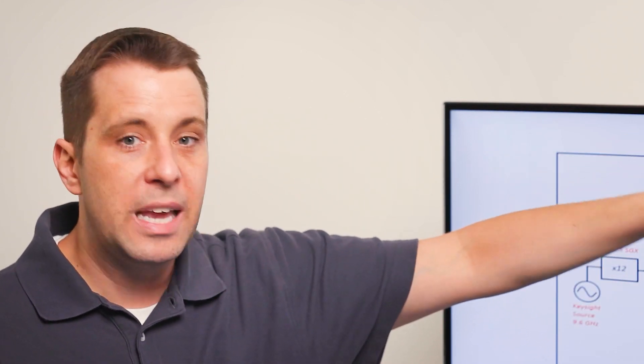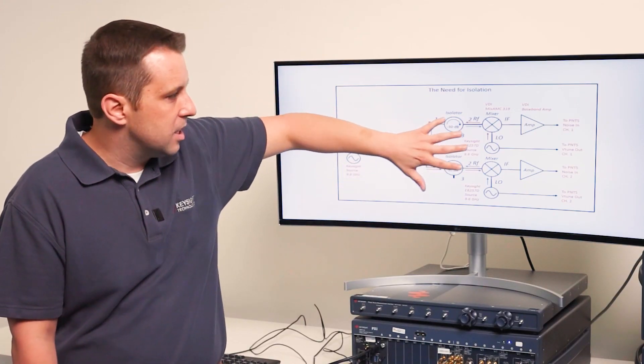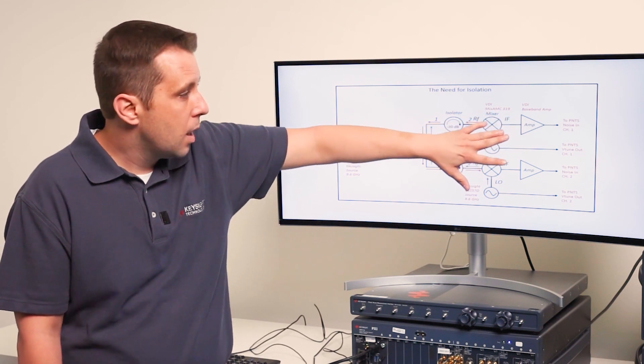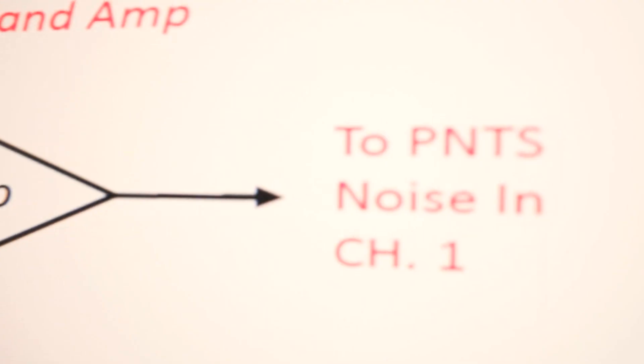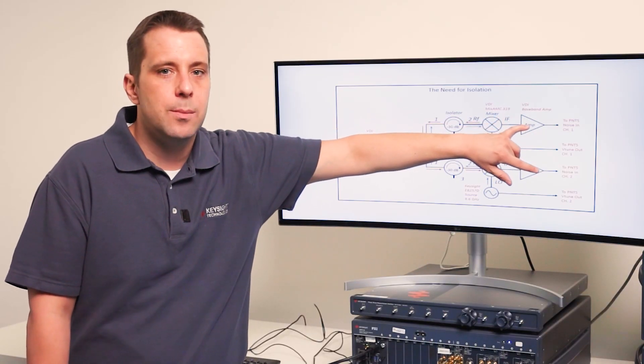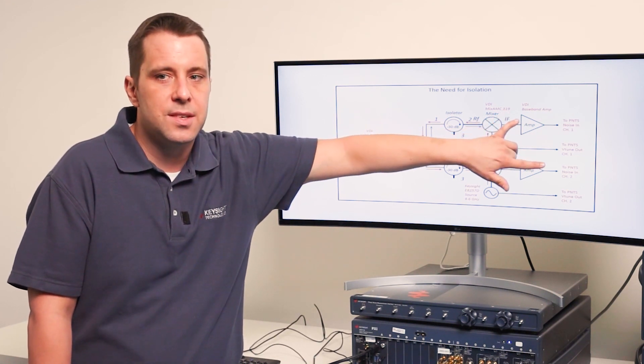All we have left is a baseband noise signal. In the IF with that baseband noise there's amplification provided by VDI. And then from there we go into our baseband noise inputs into the phase noise test system, which provides a further 56 dB of low noise gain from LNAs inside the system.